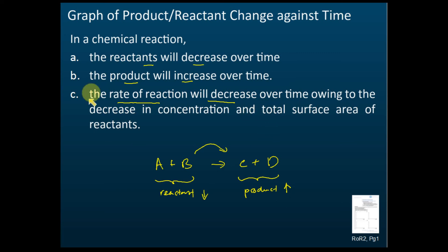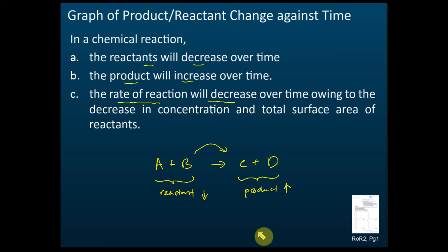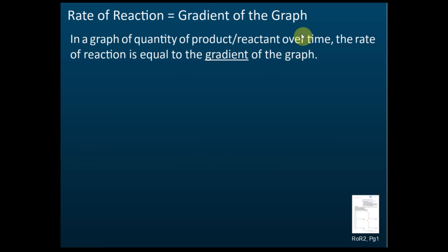We need these three pieces of information to sketch a graph, because in exams your teachers often ask you to sketch graphs. Remember: reactants reduce, products increase, and rate of reaction decreases. Now, for a graph of quantity of products or reactants over time, the rate of reaction is equal to the gradient of the graph. Let's look at what this means.